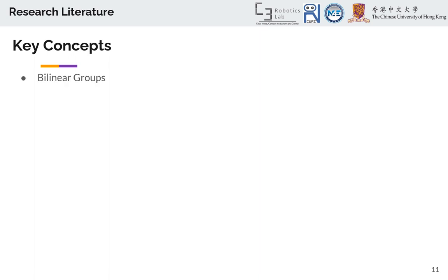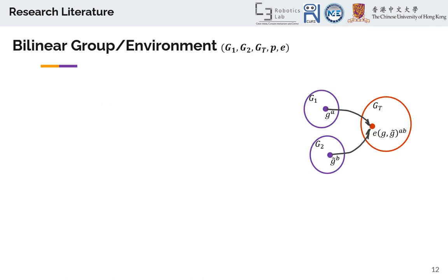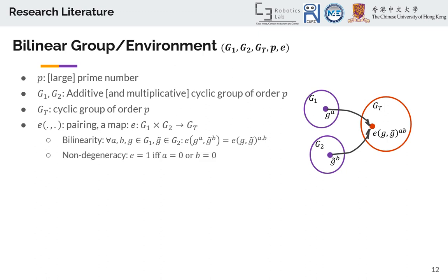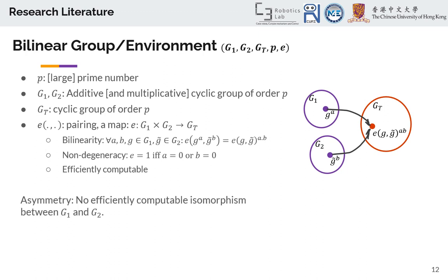Next, some key concepts. To better understand the syntax and security analysis of these constructions, we need to know bilinear groups and also the Diffie-Hellman problem and the variant used in the paper. Bilinear groups consist of five elements: G1, G2, GT, p, and e. p is a large prime number; G1, G2, and GT are cyclic groups of order p. e is a pairing from G1 and G2 to GT that must satisfy bilinearity, non-degeneracy, and be efficiently computable. In this paper, they use type 3 bilinear groups, meaning asymmetric — there is no efficiently computable isomorphism between G1 and G2, so G1 and G2 are two separate groups.